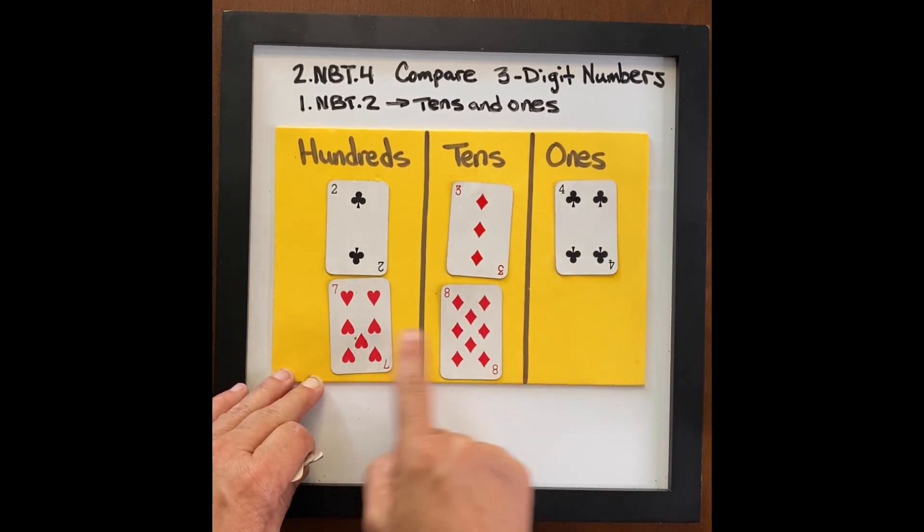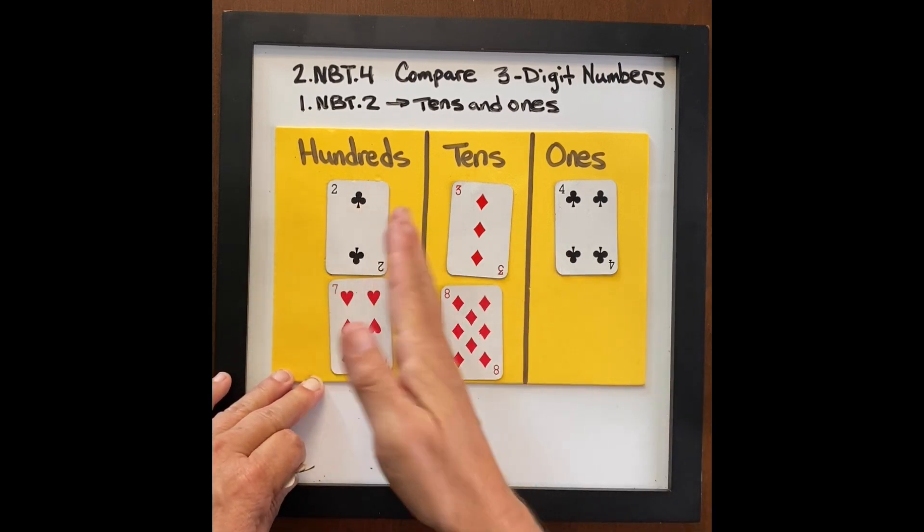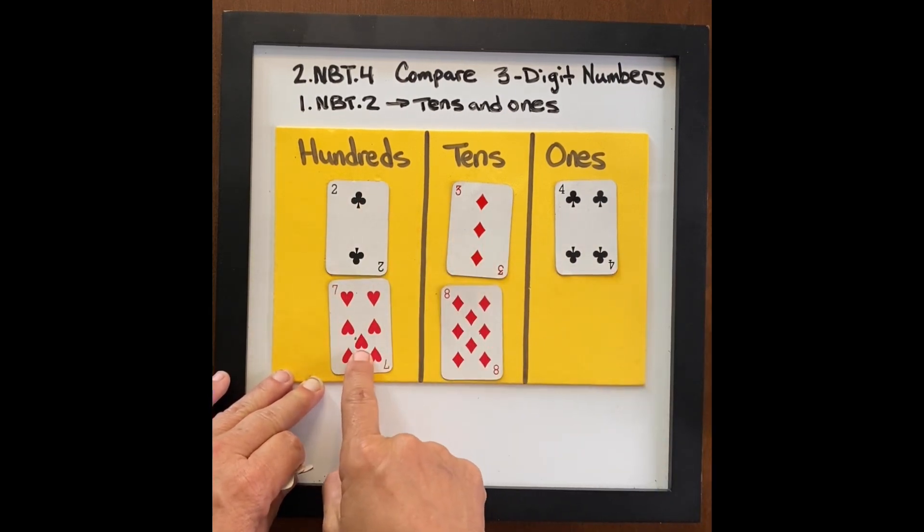Eight tens is eighty. What number do we have so far? Powerful language to keep them engaged in understanding what each of these place values mean. Seven hundred eighty.